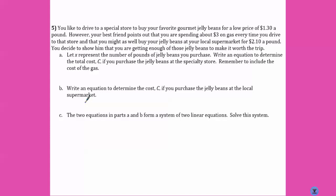And a word problem. So, you like to drive to a specialty store to buy your favorite gourmet jelly beans for the low price of $1.30 a pound. However, your best friend points out that you're spending about $3 on gas every time you drive to that store. And that you might as well buy your jelly beans at the local supermarket for $2.10 a pound. You decide to show them that you're getting enough of those jelly beans to make the trip worth it. Let X represent the number of pounds of jelly beans. Write an equation to determine the total cost if you drive to the specialty store. So we knew that the specialty store, you're paying $1.30 a pound, but you need $3 on gas. So, the cost of the jelly beans is equaling $1.30 X, because $1.30 for every pound that you buy, plus the $3 in gas.